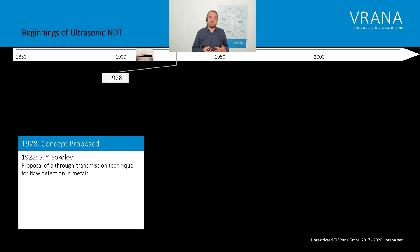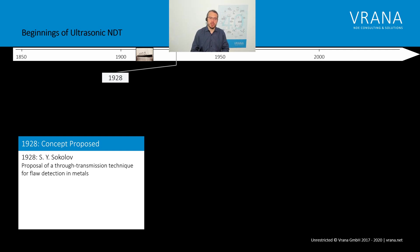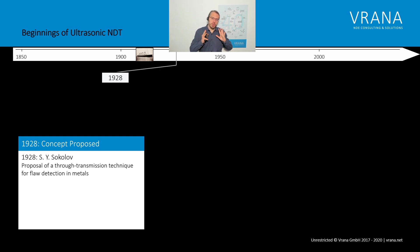Finally, in 1928, somebody proposed for the first time to use ultrasonics for non-destructive material testing. That was Sergei Sokolov. What he proposed was using ultrasonics in the through-transmission technique — not like the pulse-echo we know nowadays, but one transmitter on one side and the receiver on the other side. And not pulsed, but a continuous wave — not sending one short pulse and waiting for the response, but having a continuous wave and seeing if it is altered by the material. A little bit different from what we currently do, but it was clearly the idea to test materials.